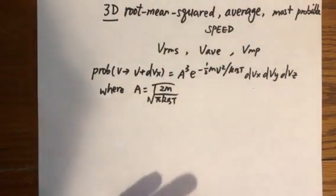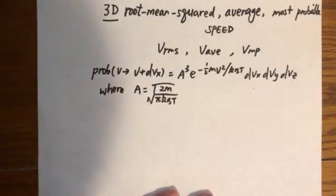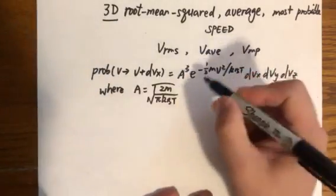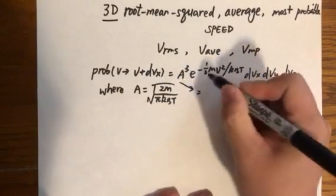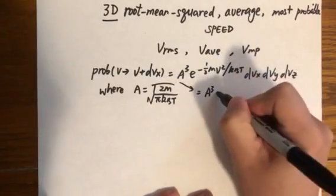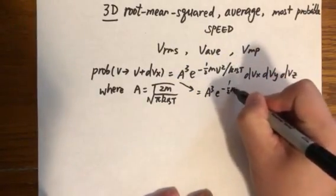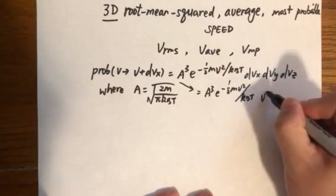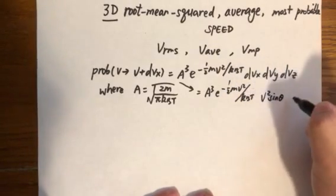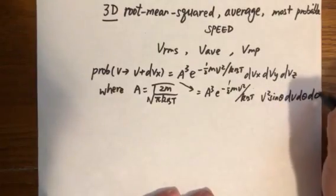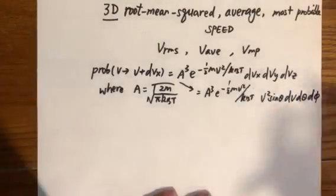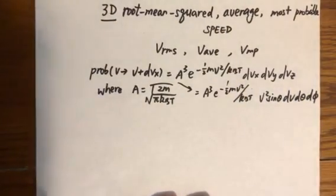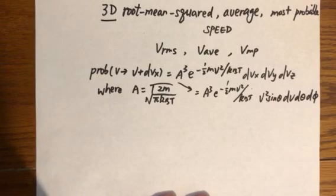By converting this Cartesian coordinates to the spherical polar coordinates, we will get something like this. If you need an analogy, theta is the latitude of the Earth. Theta ranges from zero to pi and phi ranges from zero to two pi.